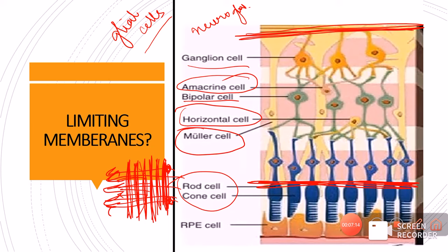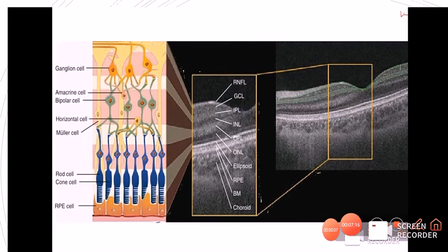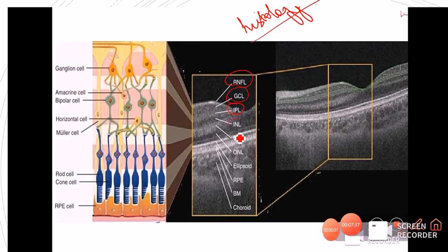This was about the layers of retina. OCT (optical coherence tomography) acts as in vivo histology and can show all 10 layers of the retina: starting from the nerve fiber layer, then ganglion cell layer, inner plexiform, inner nuclear, outer plexiform, outer nuclear, then rods and cones, RPE, Bruch's membrane, and the choroid.